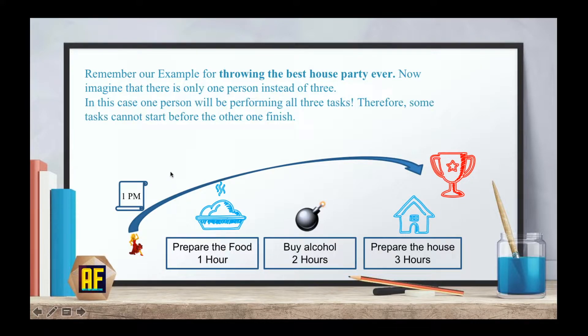In this case, one person would be performing all three tasks. Therefore, some tasks cannot start before the other one finishes. For example, when you go to buy alcohol, you cannot prepare the house at the same time because you're not in the house.